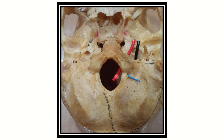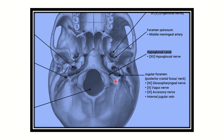In another picture, a red structure is seen passing through a foramen — this is the hypoglossal canal. This canal is important because it lies very close to the jugular foramen and the foramen magnum, which can cause confusion. The structure that passes through the hypoglossal canal is the hypoglossal nerve, which is cranial nerve 12. Through the jugular foramen, cranial nerves 9, 10, and 11 pass along with the internal jugular vein.